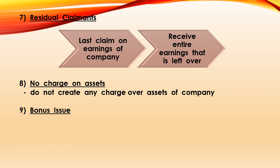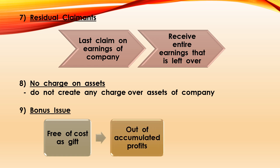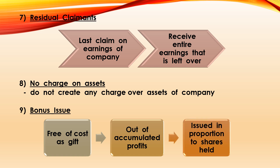The ninth feature is bonus issue, also called bonus shares. Bonus issue refers to shares given free of cost to existing equity shareholders. These shares are given out of the accumulated profits of the company and are always issued in proportion to the shares held by shareholders. For example, the company may issue bonus shares in the ratio of 2:1, meaning an existing equity shareholder who holds two shares will be given one share free of cost. This benefit of bonus issue is enjoyed only by existing equity shareholders.